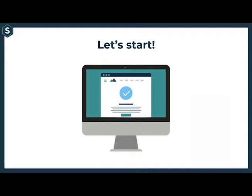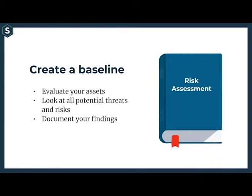Let's review each step we talked about today. With a risk assessment, you create a baseline: what are all the technology and assets that your company has? List each one and the value to your organization. What is the confidentiality, availability, and integrity of each asset? What are all the risks that could affect each asset? List all the risks and how they will impact your assets. Finally, document your findings in a spreadsheet or document and share it with the key decision makers in your team.